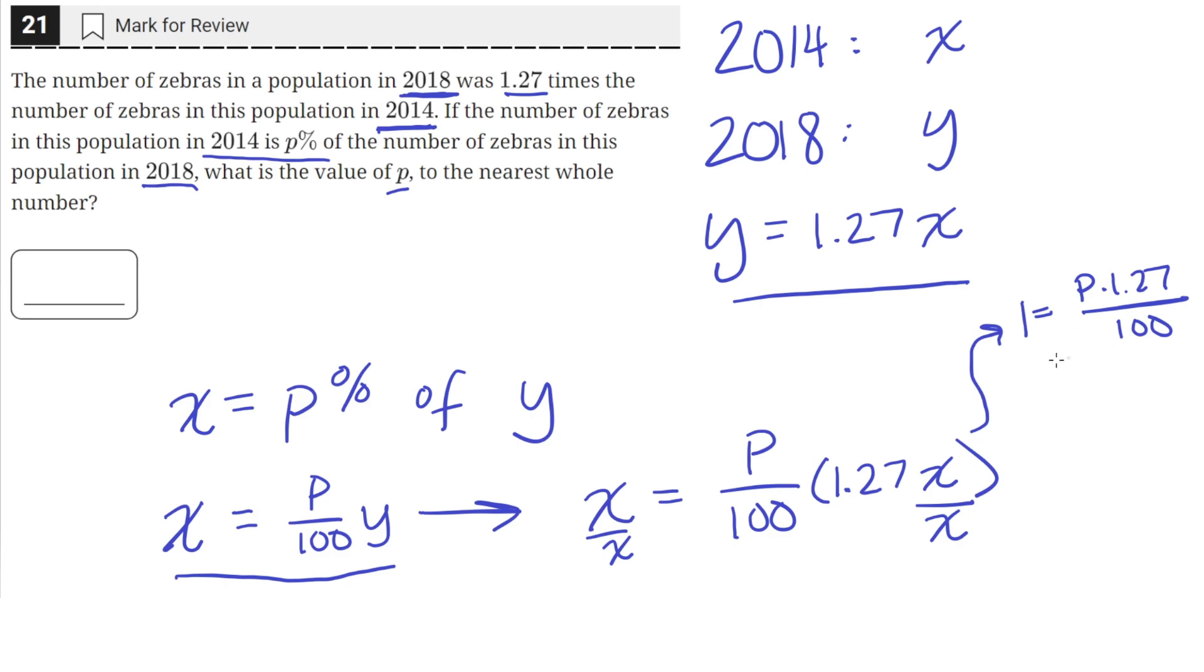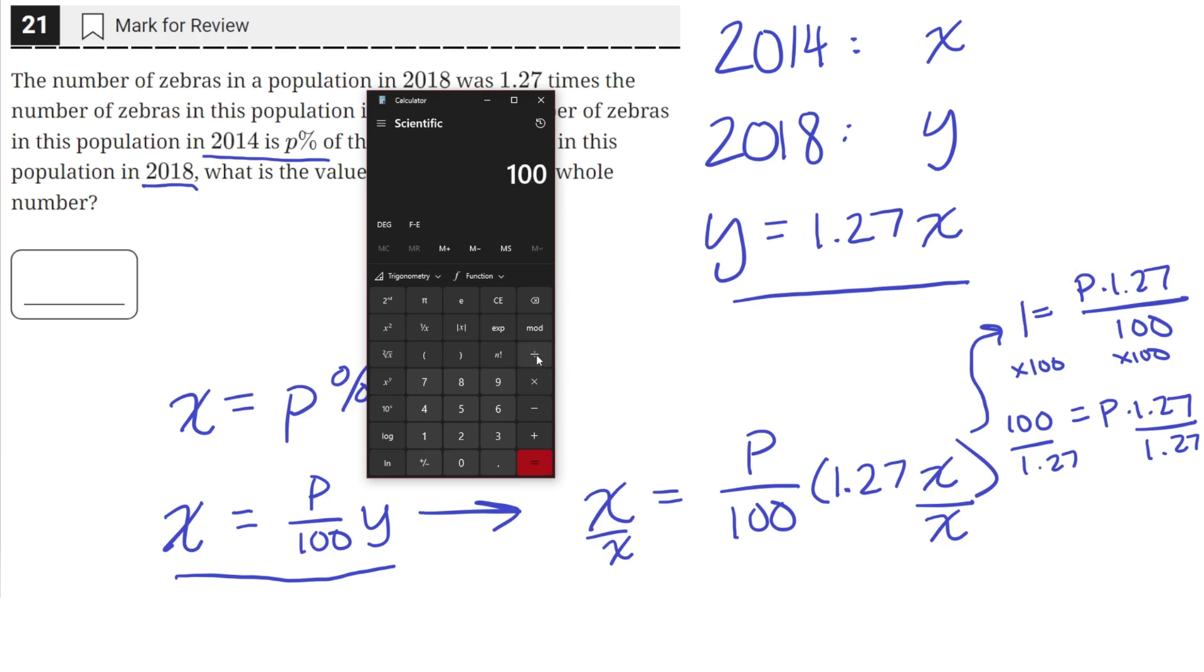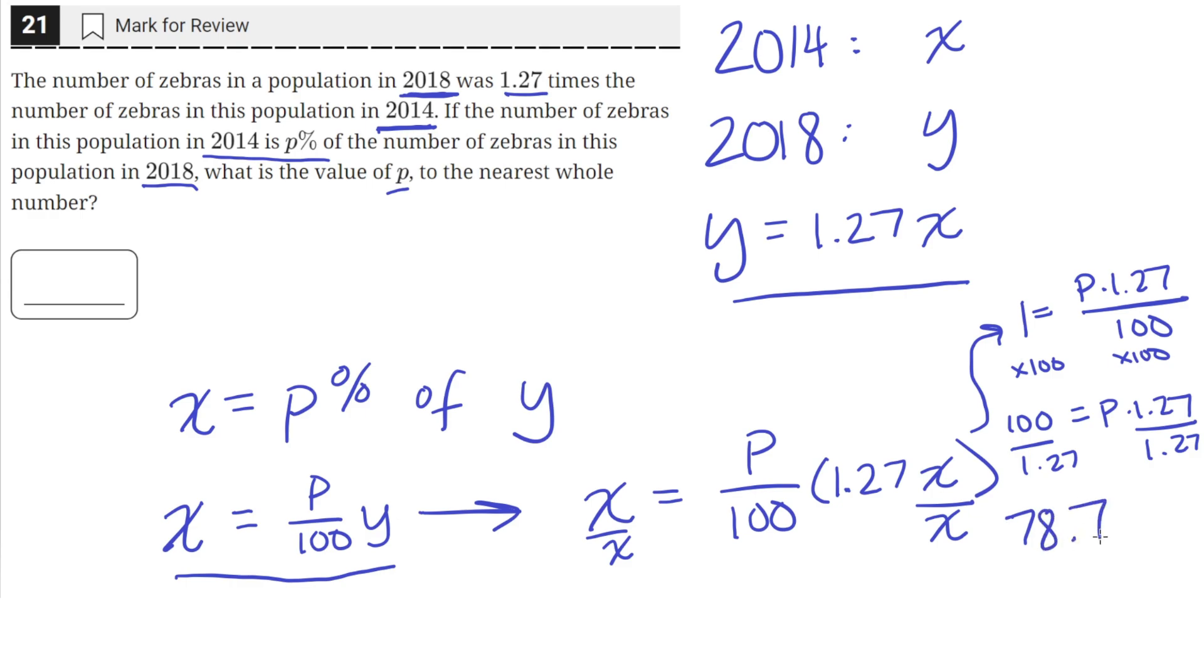So now we can just multiply both sides by 100. This will give us 100 equals p times 1.27, and then we can divide both sides by 1.27. So if we put that into our calculator, 100 divided by 1.27 equals 78.7, and that equals the value of p.